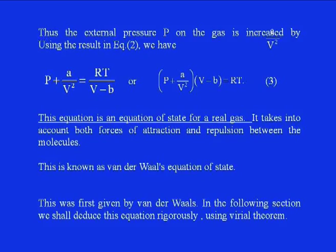This equation takes into account both the forces of attraction and repulsion between molecules. To summarize this heuristic derivation: pressure P has been increased by a/V² due to the attractive interaction, while volume V has been reduced by B due to the repulsive interaction through the excluded volume concept. Van der Waals received the Nobel Prize in 1910 for this famous work. In the following section, we shall deduce this equation rigorously using the virial theorem.